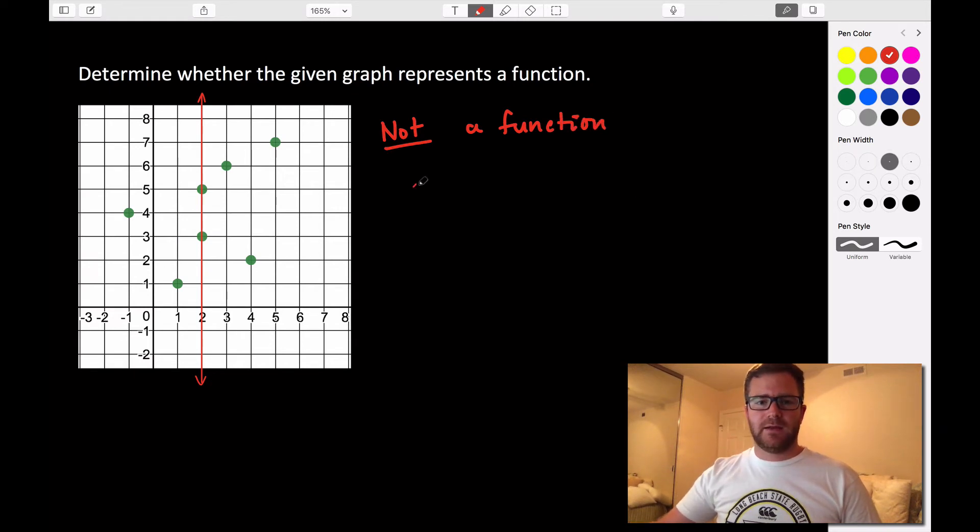Because we have that when x is equal to two, it maps to y equaling three, and it also maps to y equaling five.